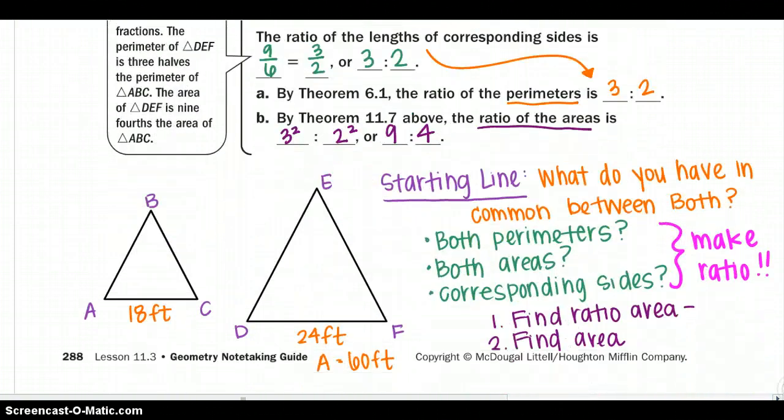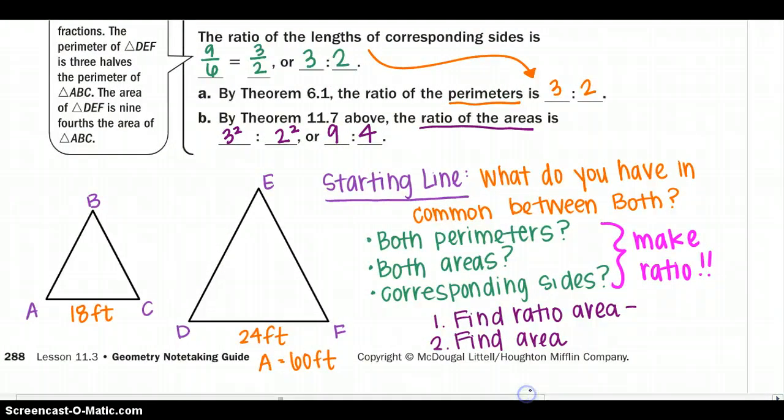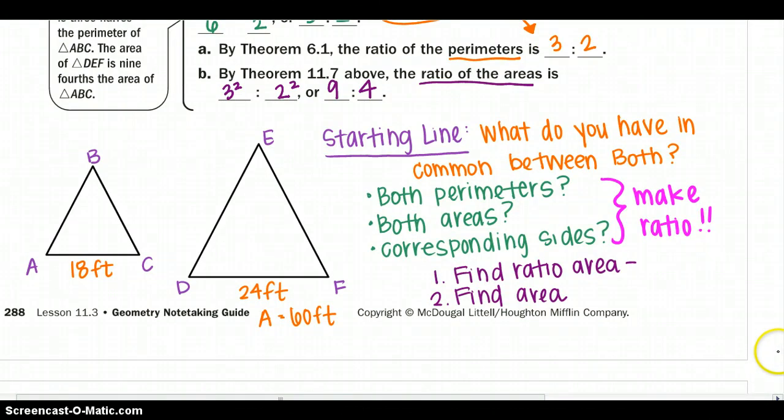Let's look at one more example. Your starting line should always be, what do you have in common between both? Do you have two of their perimeters? Do you have both of their areas? Or do you have corresponding side lengths? And that's what you're going to make your ratio with. We want to find the area of ABC, but first we need to find the area ratio.